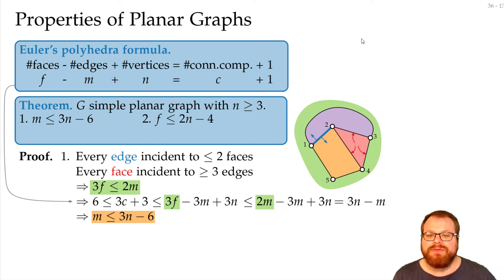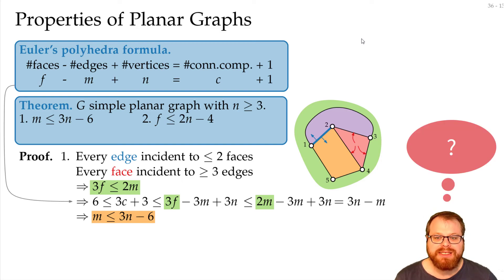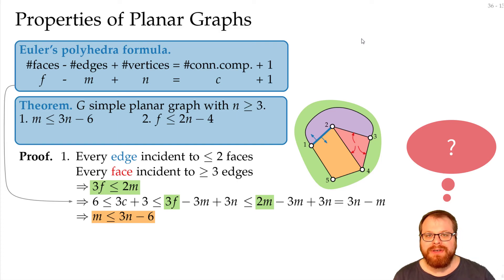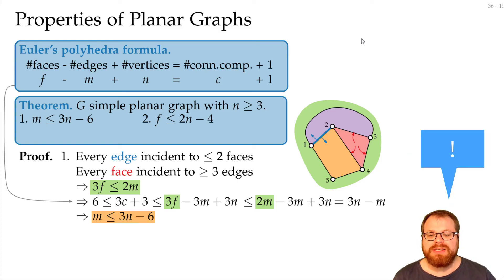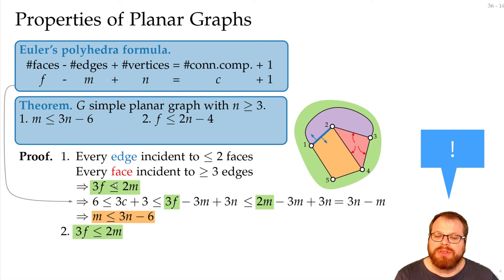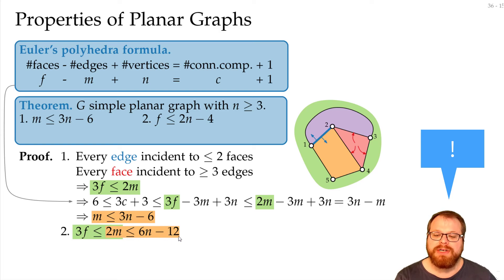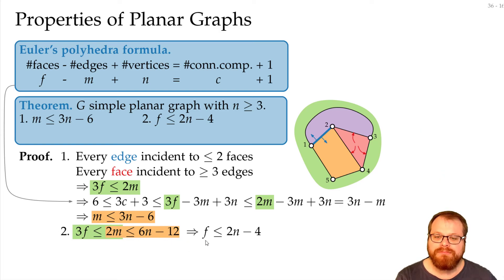The second property is that we have at most 2n minus 4 faces. This is very similar to what we had before. We start with 3f ≤ 2m, and for 2m we plug in the bound on edges we already found, giving 3f ≤ 6n − 12. Dividing by three, f ≤ 2n − 4. That's it.